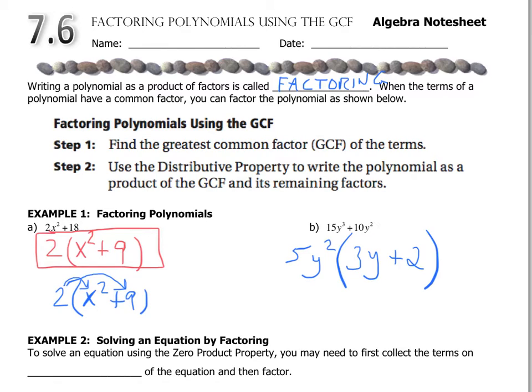So this would be my factored form of that polynomial. And again I can use my distributive property to say 5y² times 3y would be 15y³, and then times 2 is my 10y². That just helps me verify that that would be the factored pair of 5y³ + 10y².